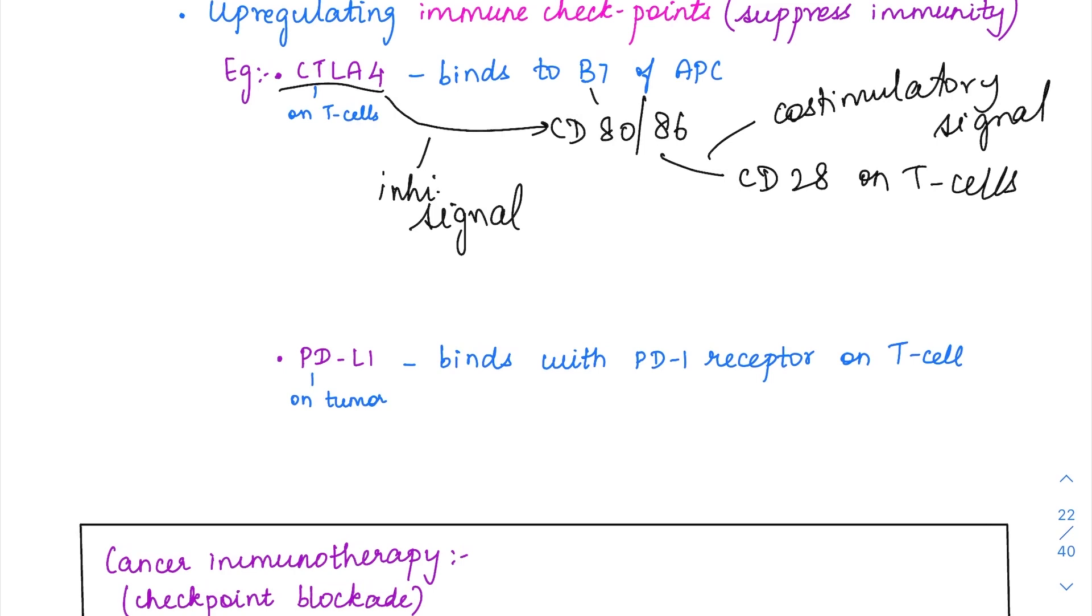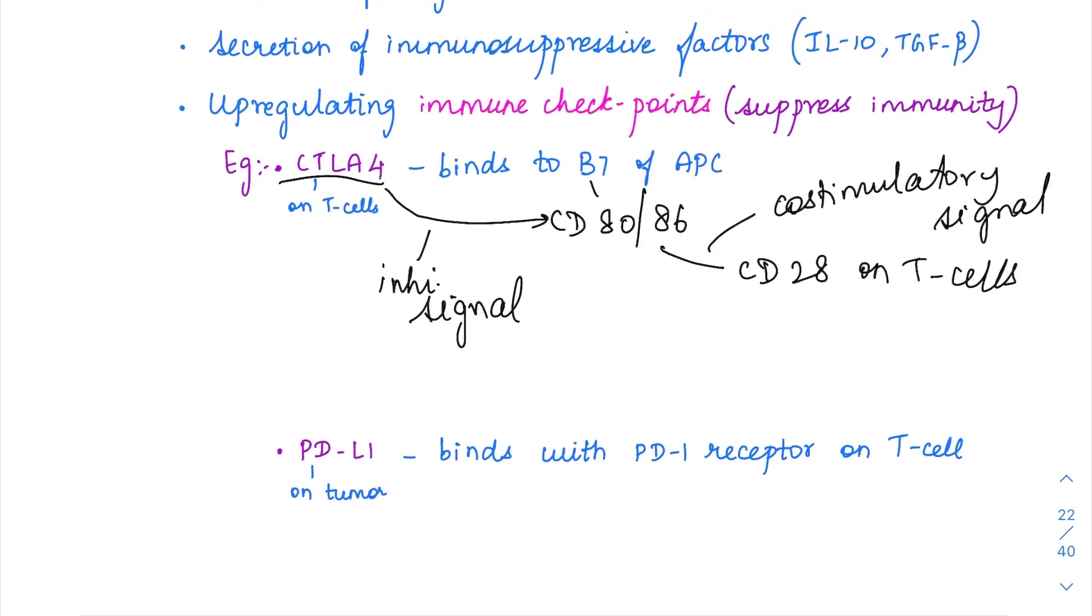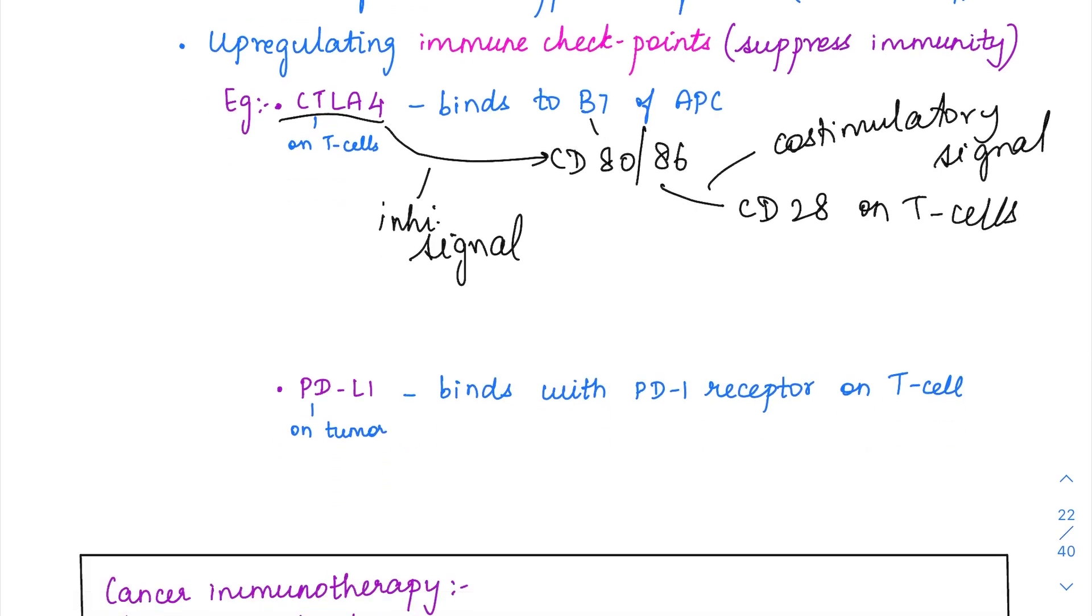It is going to inhibit and suppress the T cell immunity here. The tumor cells are going to cause upregulation of the CTLA-4 on the T cells. It is not only changing itself, it is changing everyone around it. Be it a stromal cell or be it an immune cell, it is going to try to escape from them maximally. The tumor cells are inducing CTLA-4 expression on the T cells.